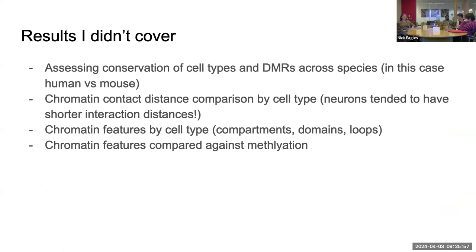This was a big paper and there's a lot I didn't cover. They also did a cross-species comparison between human and mouse, assessing how cell types and methylation were conserved. There was a lot on the chromatin conformation side — contact distance comparison by cell type, where one conclusion was that neurons tend to have shorter interaction distances. They also showed how features like compartments, topologically associated domains, and loops varied by cell type, and how methylation and chromatin features were correlated. I encourage you to check out the rest of it — thank you.